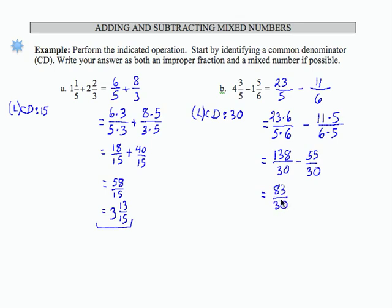That is my mixed number result. Excuse me, that is my improper fraction result. To write as a mixed number, I divide 30 into 83. That will go 2 times, that would be 60. So 83 minus 60 is 23, over 30, and that is my mixed number result.